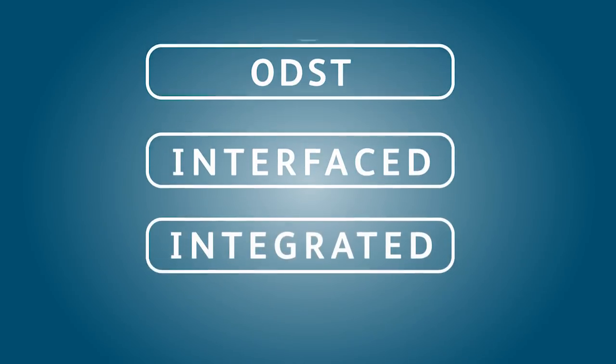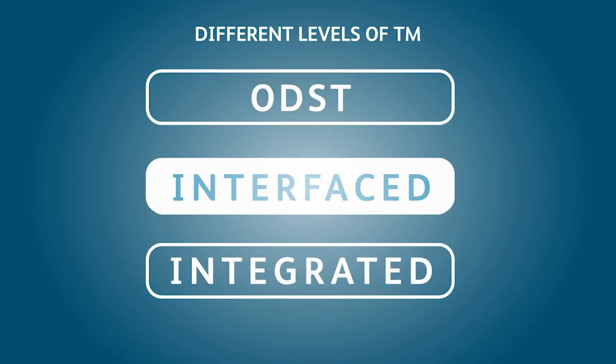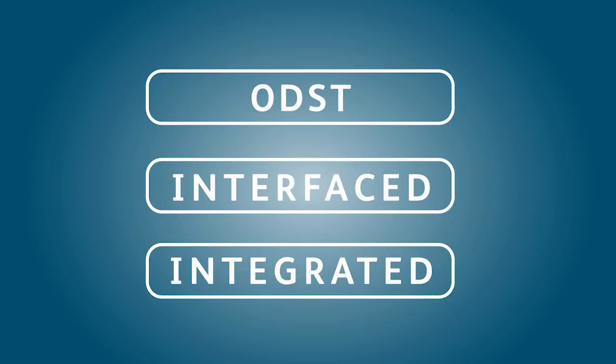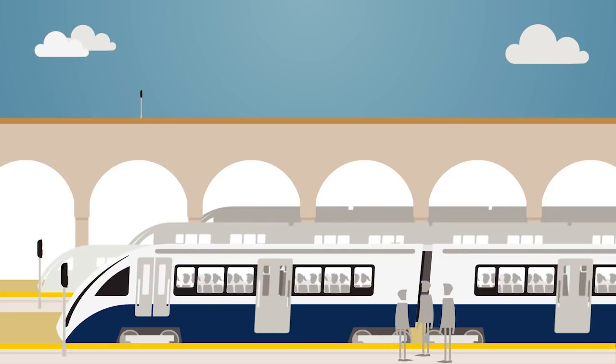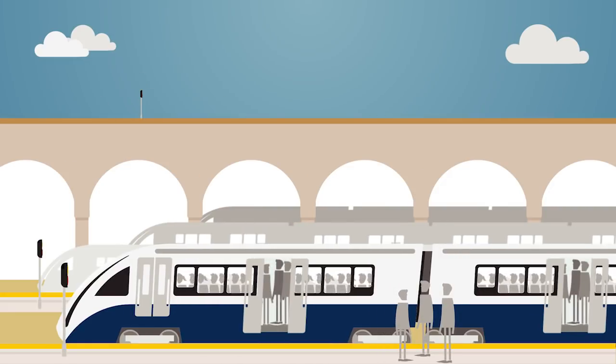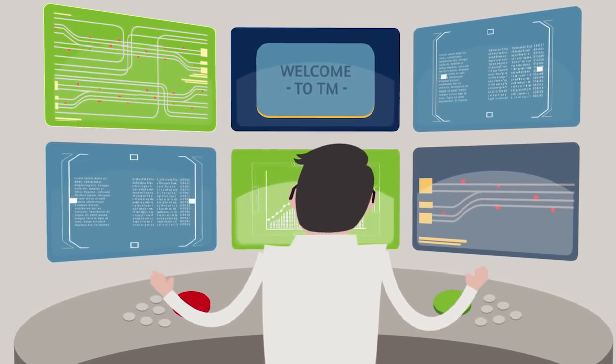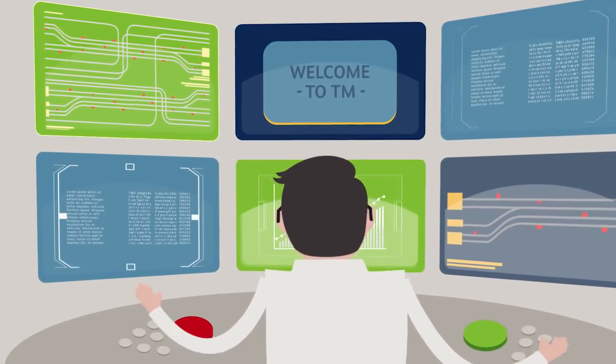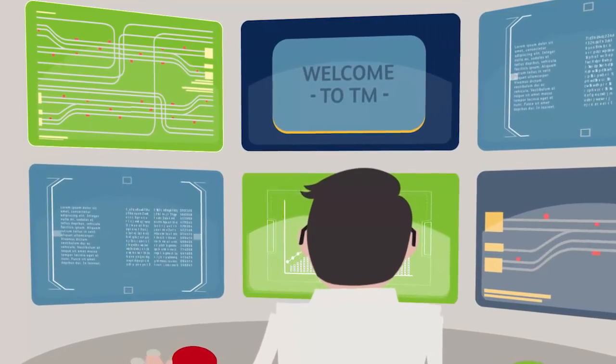You can choose from three types of TM. These are Operational Decision Support Tools, which we call ODST for short, Interfaced and Integrated. TM systems retrieve data via LINX from numerous sources, which enables the system to plot ahead and identify any conflicts. The system can then suggest and, depending on its type, enact or present solutions that can be manually executed. This means the problems are identified before they become delay-causing, and a solution is found before the problem actually occurs.